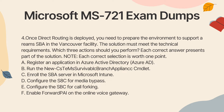Question 4. Once direct routing is deployed, you need to prepare the environment to support a Teams SBA in the Vancouver facility. The solution must meet the technical requirements. Which three actions should you perform? Each correct answer presents part of the solution. A. Register an application in Azure Active Directory (Azure AD). B. Run the New-CsTeamsSurvivableBranchAppliance cmdlet. C. Enroll the SBA server in Microsoft Intune. D. Configure the SBC for media bypass. E. Configure the SBC for call forking. F. Enable forward PIE on the online voice gateway.